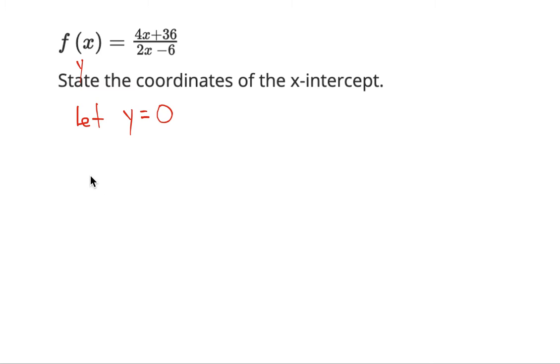That would be 0 equals 4x plus 36 over 2x minus 6. Now we have to solve, so we multiply both sides by 2x minus 6. If we do it to both sides, this would still be 0 and this would cancel on this side. So 0 times this is 0, and we get 4x plus 36.